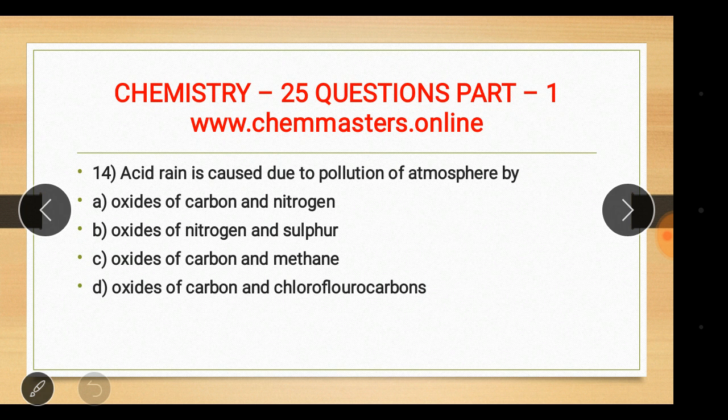Question fourteen: acid rain is caused by pollution of the atmosphere by oxides of nitrogen and sulfur — answer B. This results in the formation of nitric acid and sulfuric acid. The other options — oxides of carbon and nitrogen, oxides of carbon and methane, and oxides of carbon and chlorofluorocarbons — are incorrect.